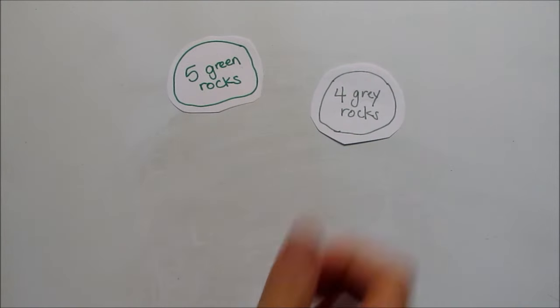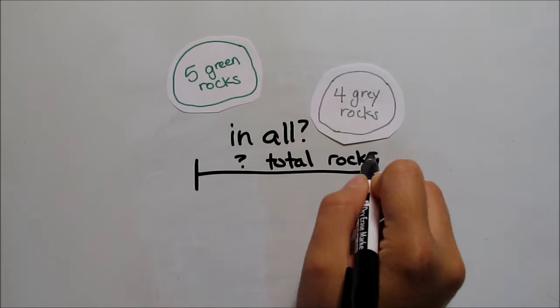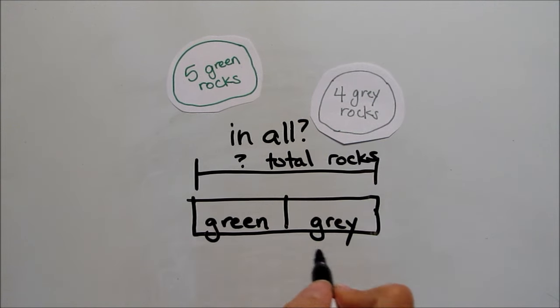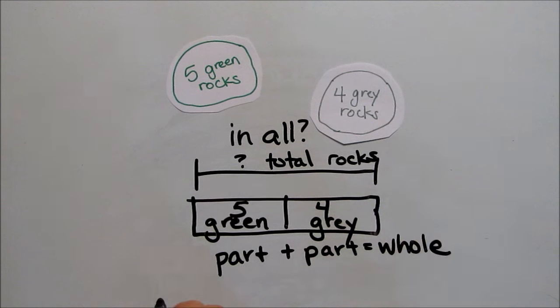Here's another example. If Sarah has five green rocks and four gray rocks, then we can use a strip diagram to find out how many rocks there are in all. The whole here is her total number of rocks. The parts are green rocks and gray rocks. Because the pieces equal the whole, we know we can combine the green rocks and gray rocks to find the total number of rocks.